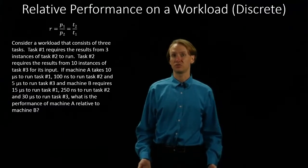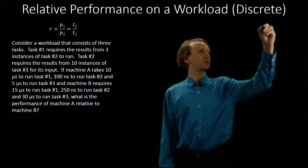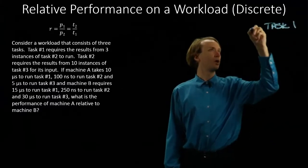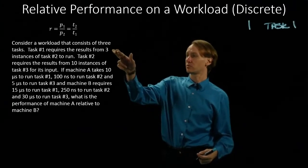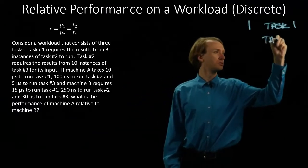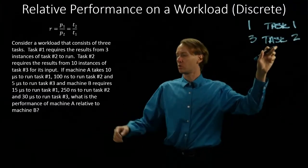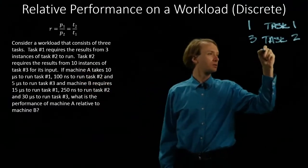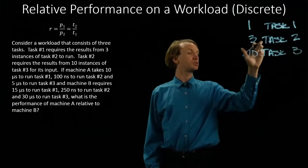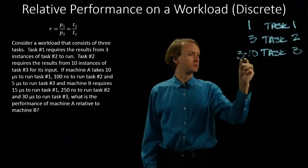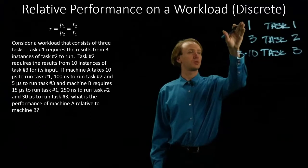We'll want to start by calculating how many times we need to run each task to complete one instance of task number one. So, obviously, we will run task number one one time. In order to run task one once, we need the outputs from three instances of task number two. And for each instance of task two, we're going to need to run task number three ten times. Task three will get run ten times for each instance of task number two, so we'll multiply ten by three to tell us that we need a total of thirty instances of task three in order to complete one instance of task one.